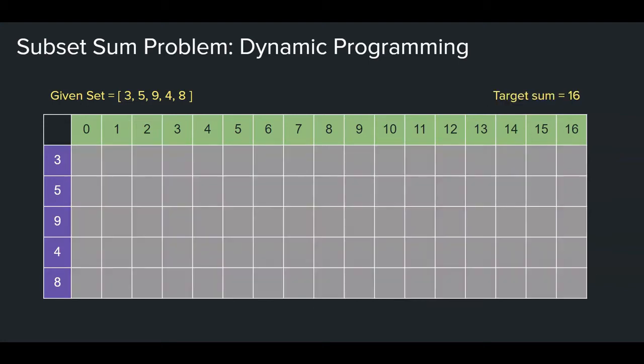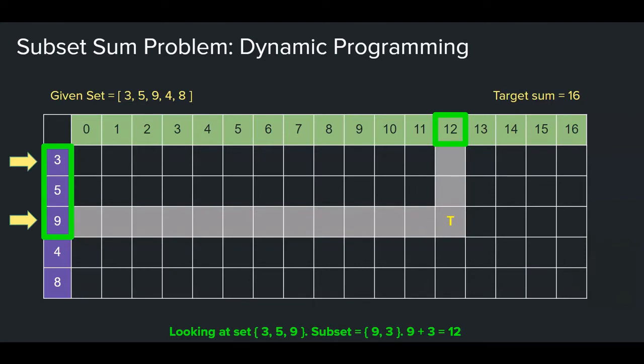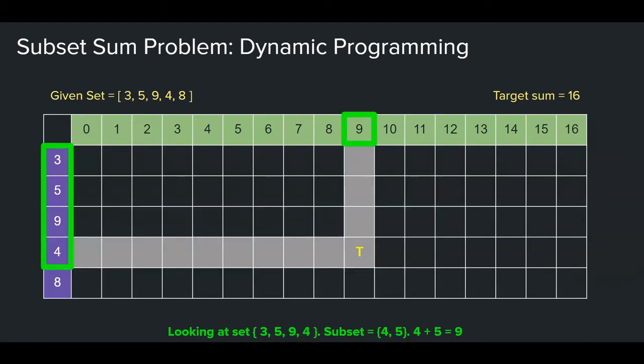We will be filling this grid with true and false values. A true value means the value in this column is the sum of the subset of numbers in the row for that column. It'll be clearer with some examples. For example, this field would be true because if you look at the set 3, 5, and 9, there is a subset whose sum equals 12. That's 9 and 3. Another example, this field would be true because if you look at the set 3, 5, 9, and 4, there is a subset whose sum equals 9. That is 5 and 4.